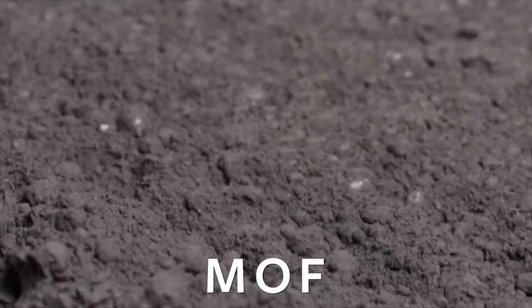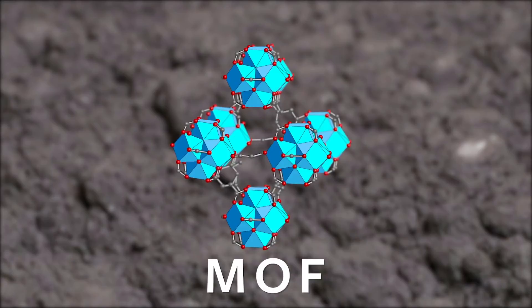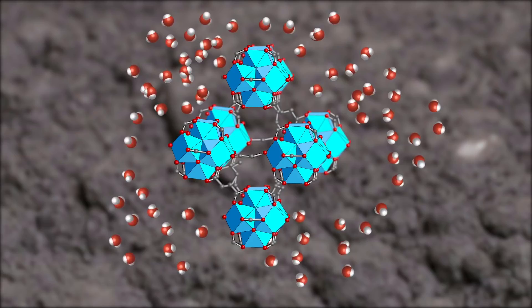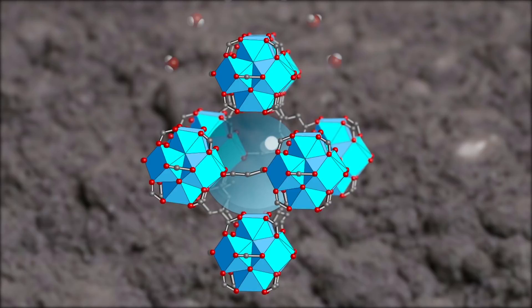We leave it overnight because during the night we have a lot of water content in the atmosphere, so these water molecules get inside the framework and stay there. You can imagine it's like a sponge.